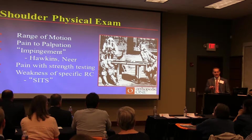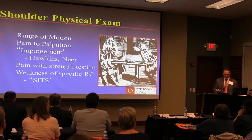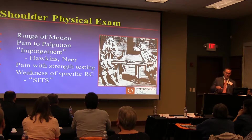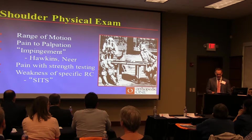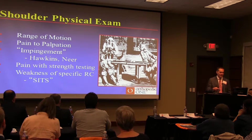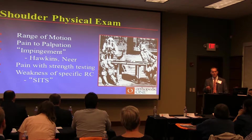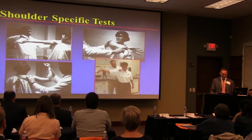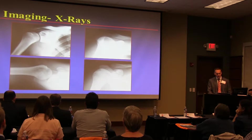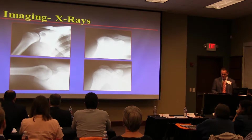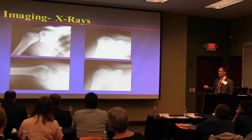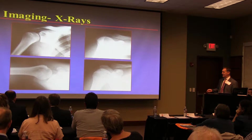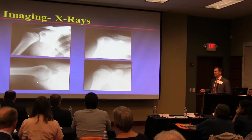Range of motion is important, as is pain to palpation — where do they hurt. Biceps tenderness is classic and different from rotator cuff pain or bursitis pain. Use specific impingement tests. Assess whether they have good strength with pain, or pain and weakness, and look for specific weakness of specific rotator cuff muscles. The physical exam and history are very important to start forming a diagnosis, so you don't feel lost with shoulder pain. Specific X-rays: we typically get four views of the shoulder.